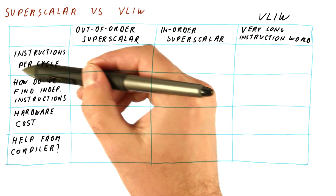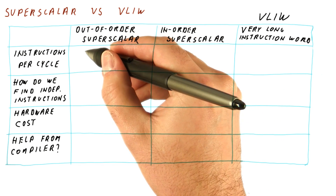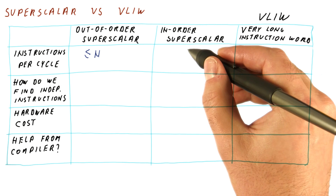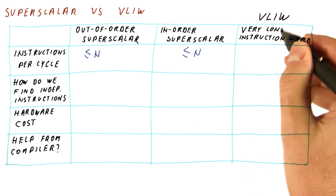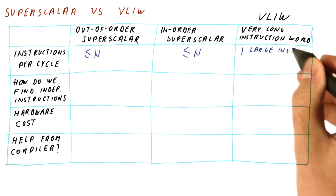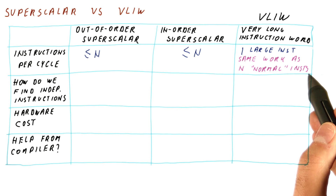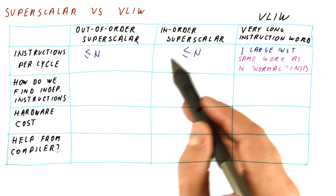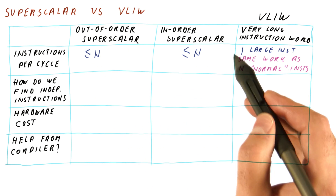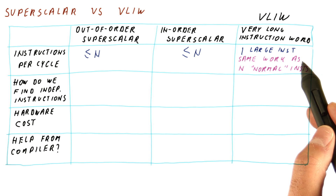First, how many instructions per cycle do we try to do? An N-issue out-of-order superscalar processor is trying to do up to N instructions per cycle. An in-order superscalar processor is also trying to do up to N instructions per cycle. A VLIW processor is different in that it tries to execute one large instruction per cycle, but that one large instruction does the same work as N normal instructions would do.